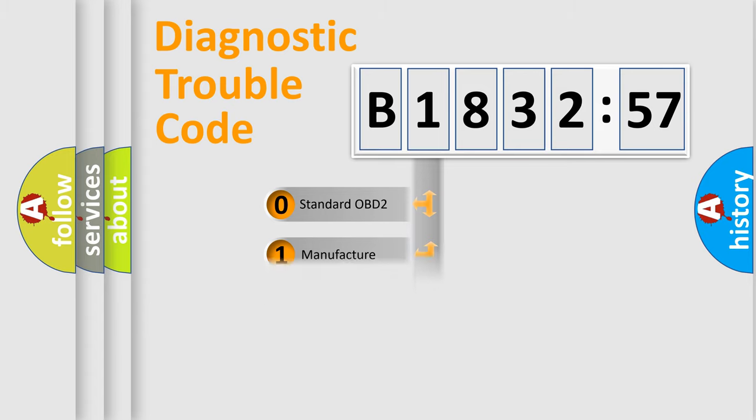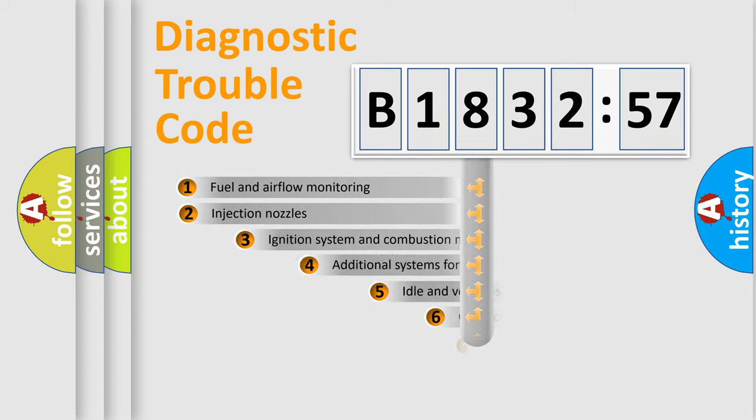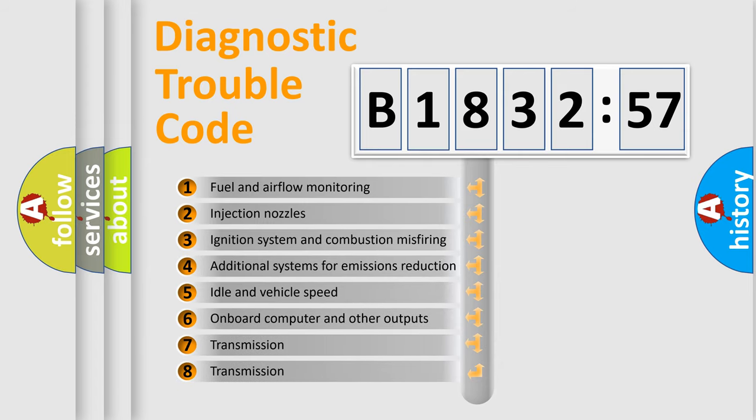If the second character is expressed as zero, it is a standardized error. In the case of numbers 1, 2, 3, it is a manufacturer-specific expression of the car-specific error.